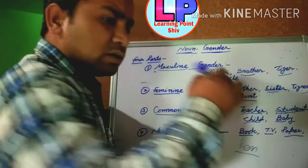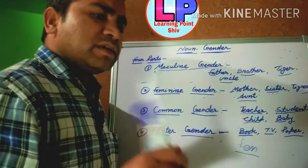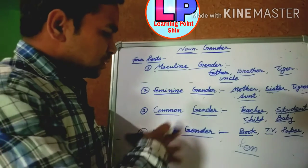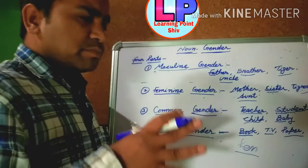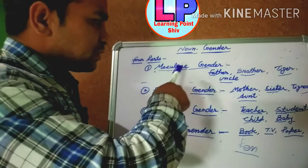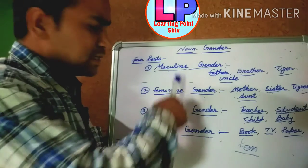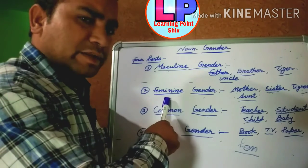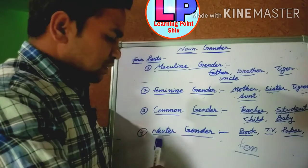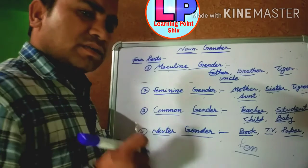So, what are all non-living things? These are the 4 genders: masculine gender, feminine gender, common gender, and neuter gender.